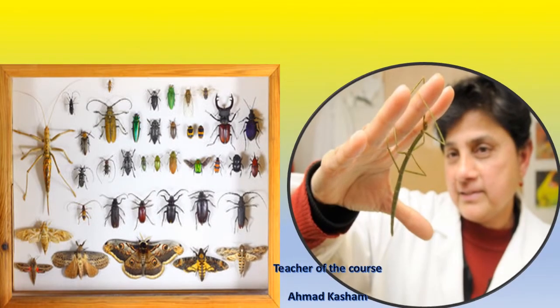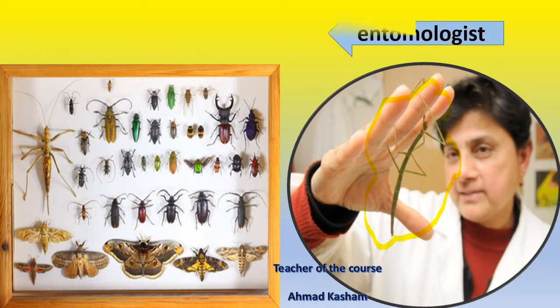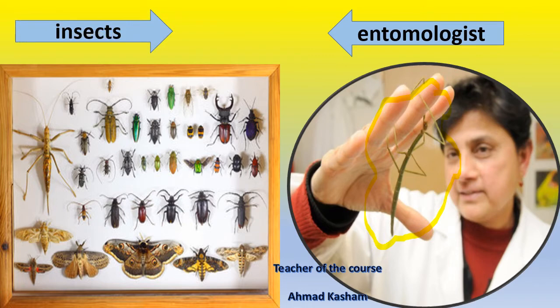What do we have here? Look at this man. He is holding an insect in his hand. So he is an entomologist. An entomologist is a person who studies and takes care of insects. And here — insects. We have different shapes and types of insects.